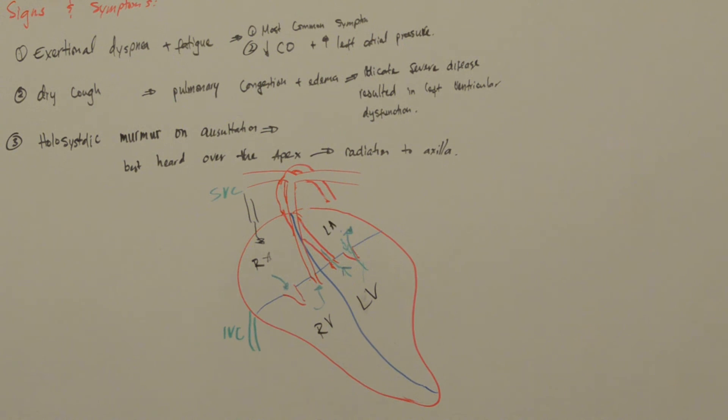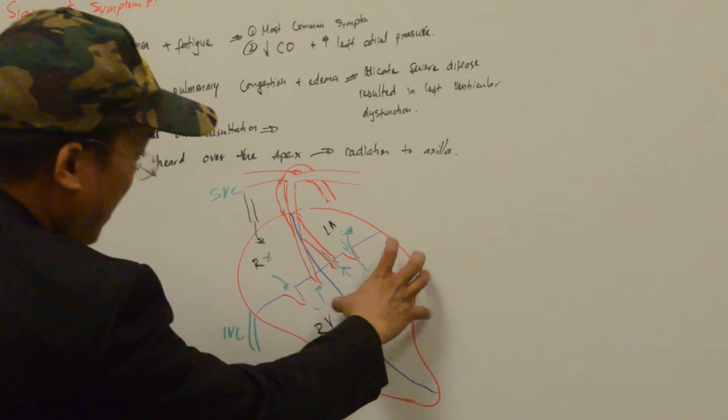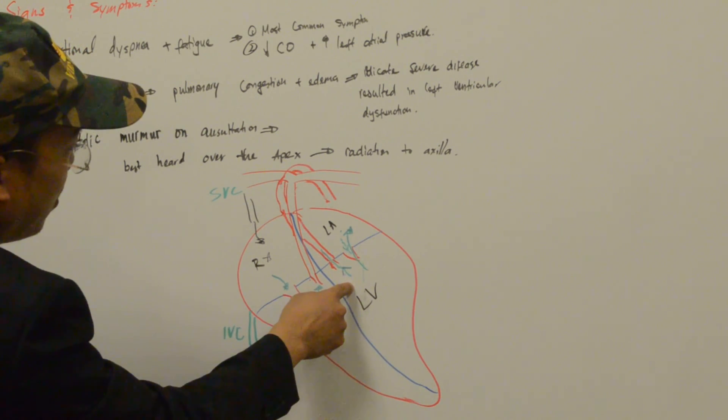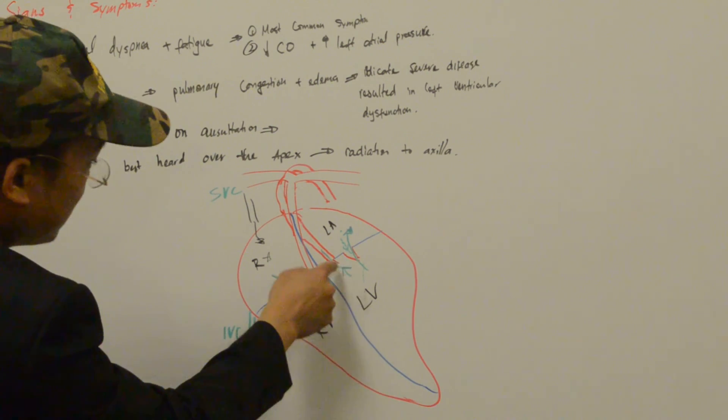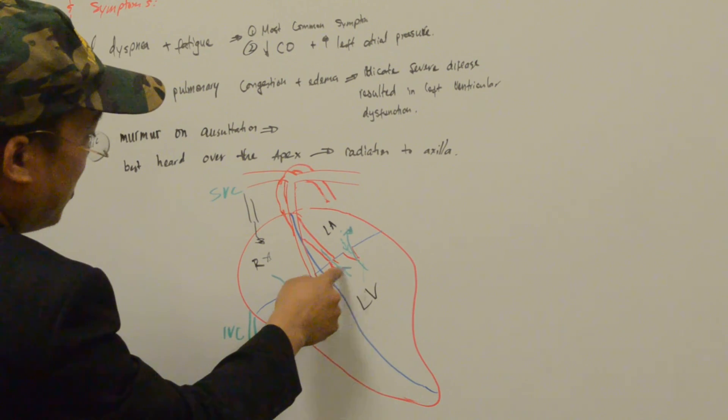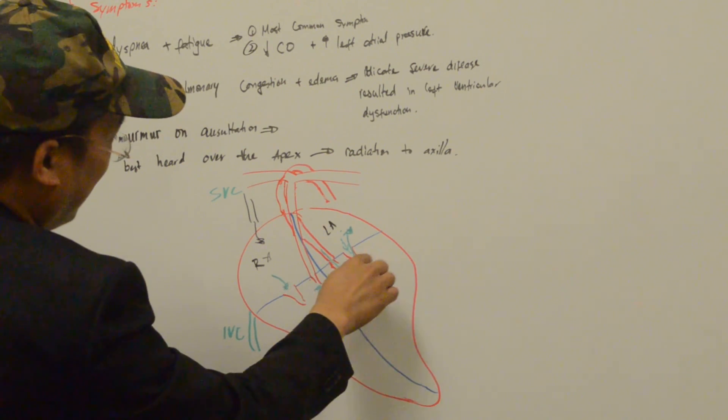The signs we look for in mitral regurgitation include a holosystolic murmur on auscultation. Why is it a holosystolic murmur? When the heart contracts during systole, blood from the left ventricle is supposed to be ejected into the aorta through the aortic valve.